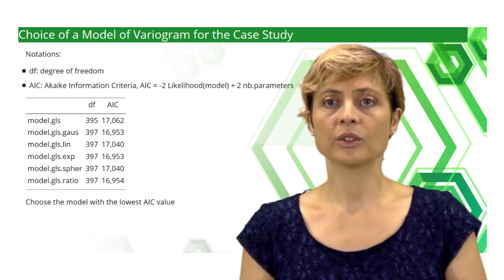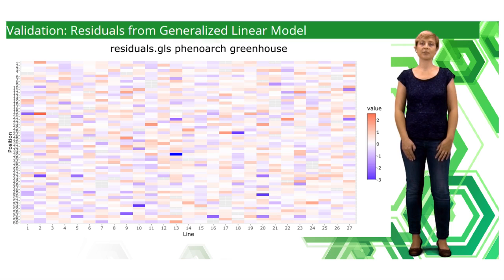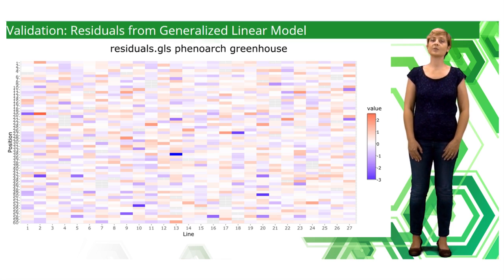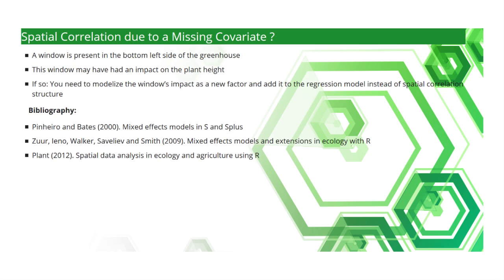No spatial structure seems present in the residuals any longer. The chosen model seems to have caught all the information from the data. Imagine, we learn some new information that a window is present on the bottom left side of the greenhouse. This window may have had an impact on the plant heights, as cooler temperatures may have infiltrated from the window into the greenhouse. This information suggests a new model with a new variable to add for the regression instead of a spatial correlation.